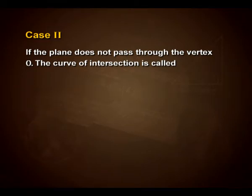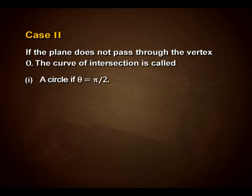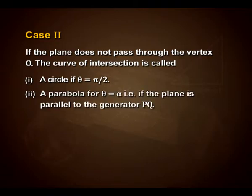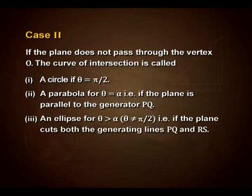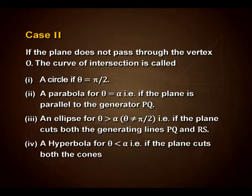In the second case, if the plane does not pass through the vertex O, the curve of intersection is called a circle if theta is equal to pi upon 2. It is called a parabola for theta equal to alpha, that is, if the plane is parallel to the generator PQ. It is called an ellipse for theta greater than alpha and theta not equal to pi by 2, that is, if the plane cuts both the generating lines PQ and RS. It is called a hyperbola for theta less than alpha, that is, if the plane cuts both the cones.